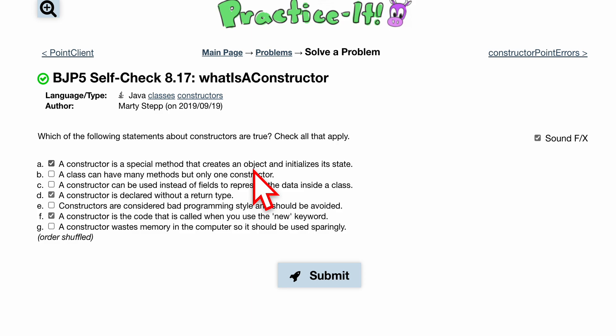Option B: a class can have many methods but only one constructor. This is false. We just saw from the previous one it has two constructors.